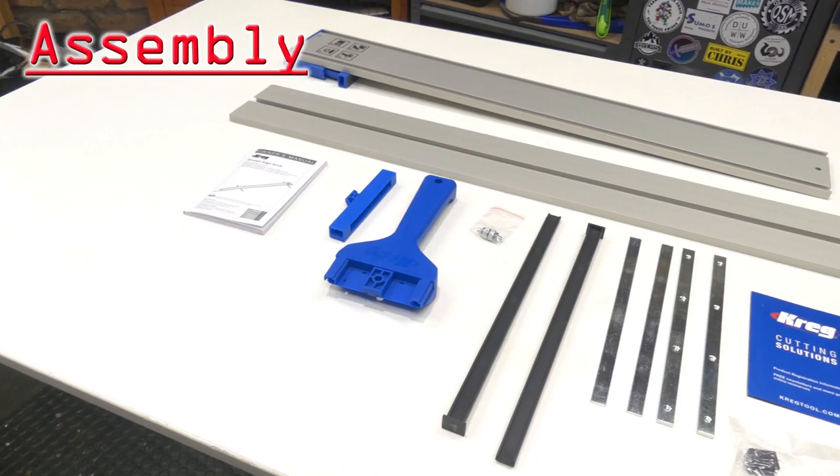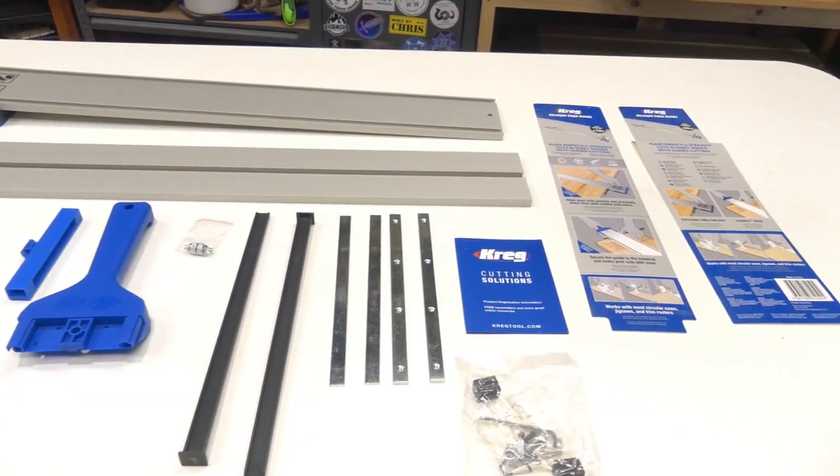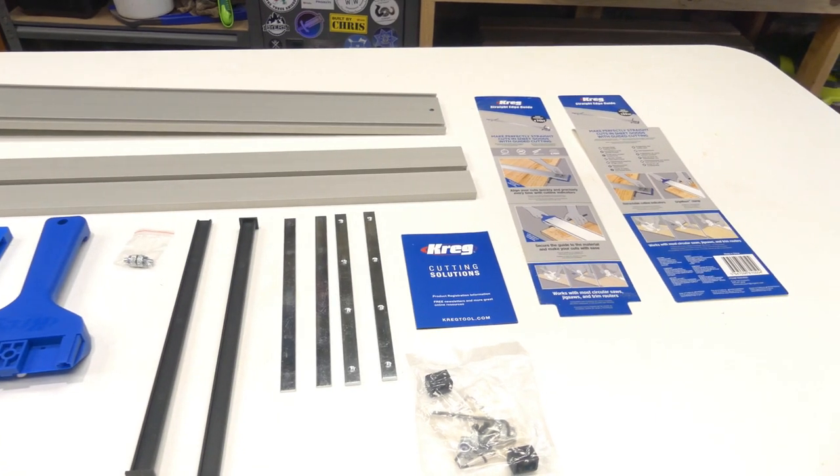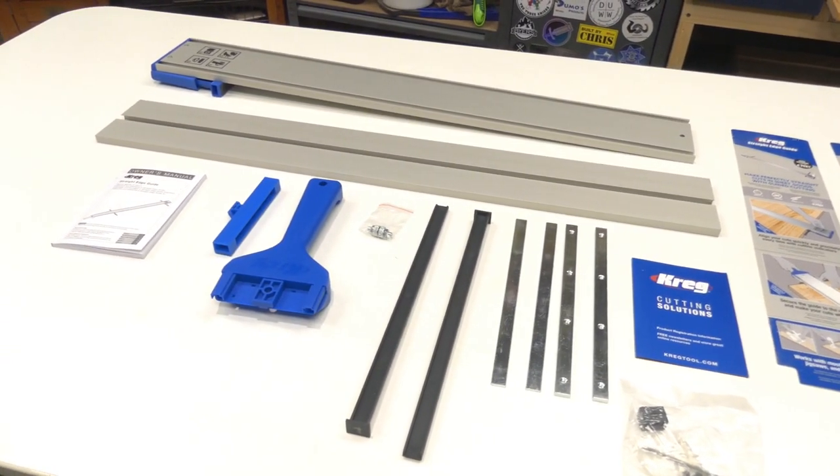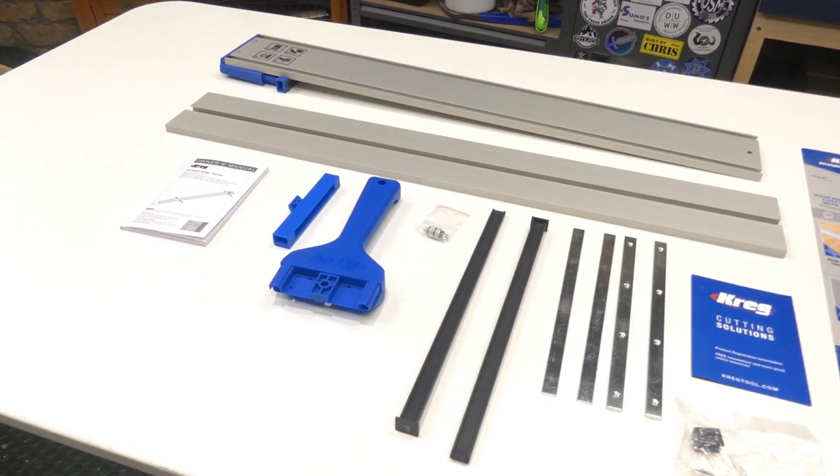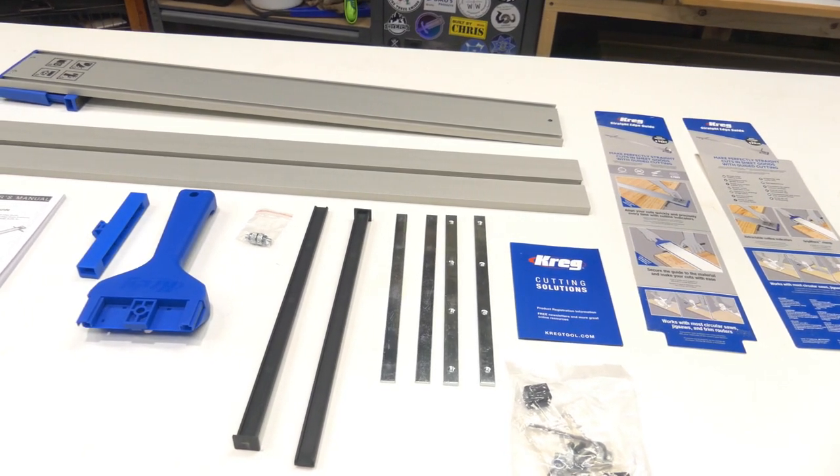So this is the regular version. It also comes in XL. The difference being that this one will do about 1.2 meters, 4 feet. The XL will do the full sheet of plywood at 2.4 meters or 8 feet. However, assembly is pretty much the same. You just need to repeat a few steps if you get the long one. Let's start putting some of these bits together.